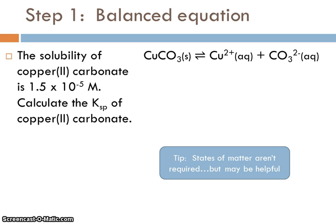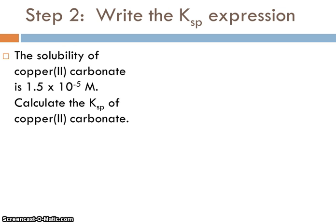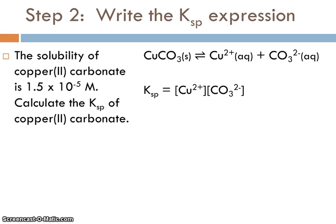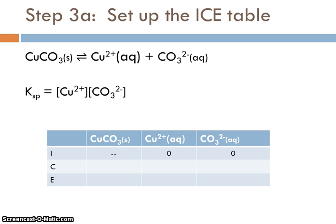Copper(II) carbonate gives copper ions and carbonate ions in a one-to-one ratio because their charges are both the same magnitude. States of matter are not required in these equations, but you may include them. The reactant is always a solid dissolving in aqueous solution. The KSP expression has a denominator of 1, and since both product coefficients are 1, KSP = [Cu²⁺][CO₃²⁻]. We were given those concentrations in the problem.